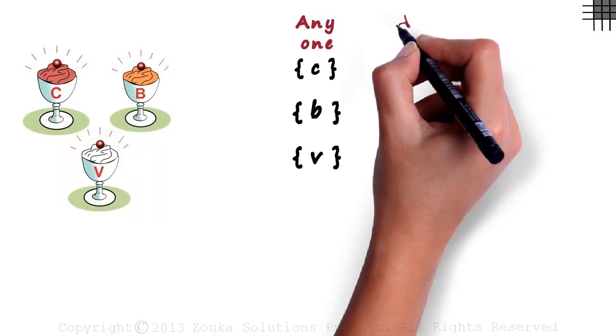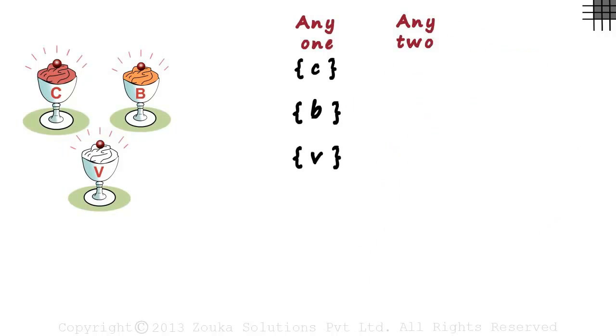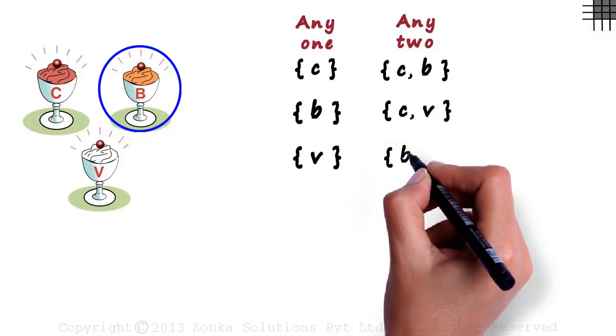But what if you feel like having two at a time? What are the different possibilities? You can have chocolate and butterscotch together or you may want chocolate and vanilla together. Is there any other combination possible? Yes, you could also have butterscotch and vanilla together.